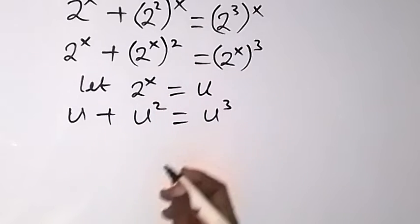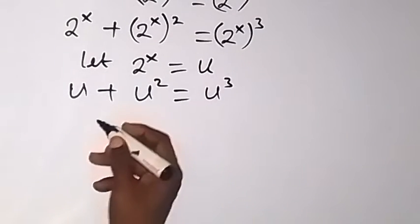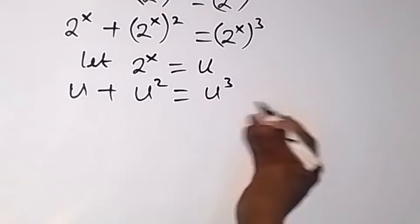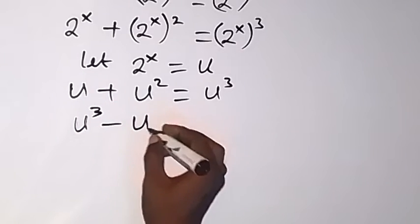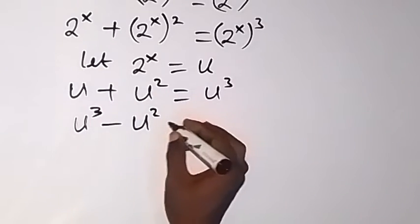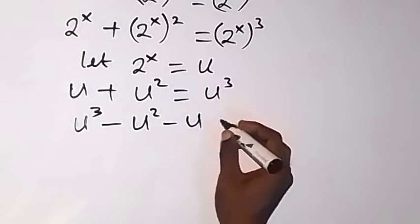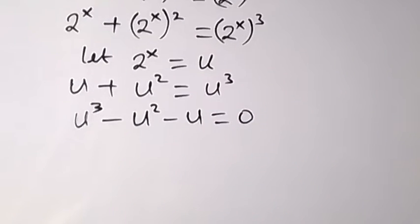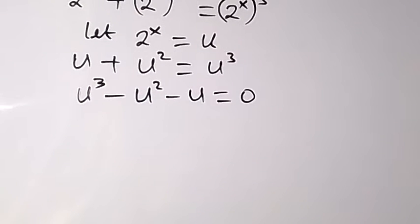We have replaced 2 raised to power x with u. From there we can bring everything to one side. Assuming we bring everything to the left side, we have u cubed first, then minus u squared, then minus u, equals zero — because on the right side there will be nothing remaining. Let's solve this.